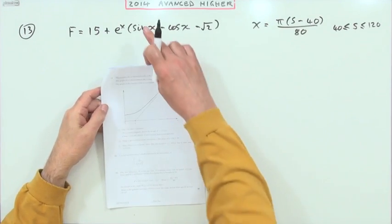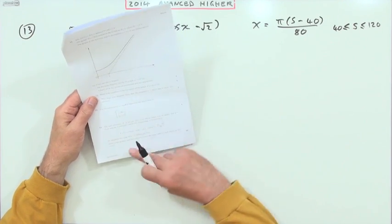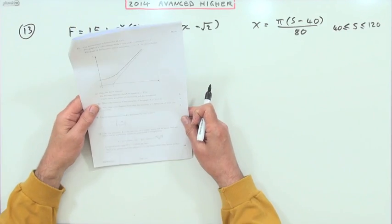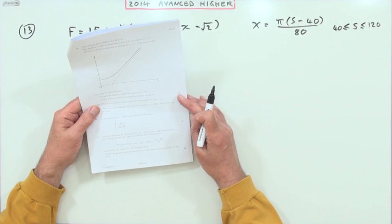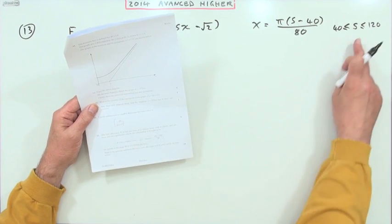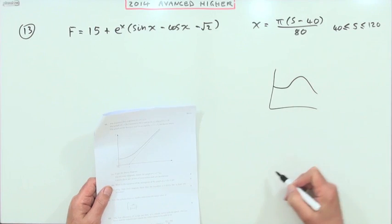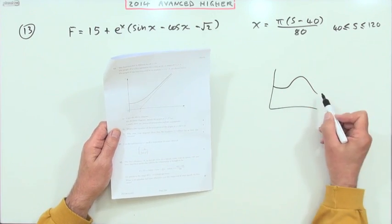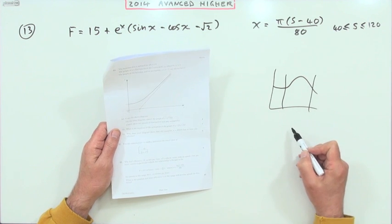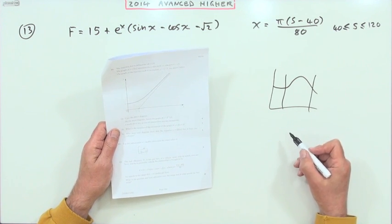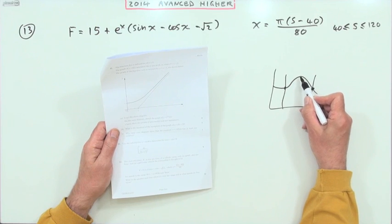Number 13 from the 2014 Advanced Higher. We have greatest and least efficiency - because it's not maximum/minimum turning points or stationary values, it talks about greatest and least and there's an interval involved. So there's a graph within some interval, and it says s is 40 to 120. The maximum and minimum values should occur at the end points unless there are any stationary points that are turning points in between.